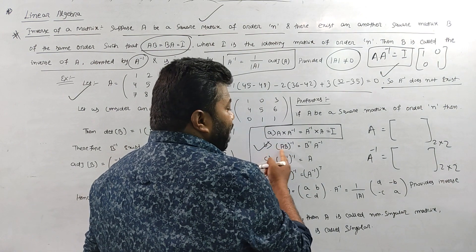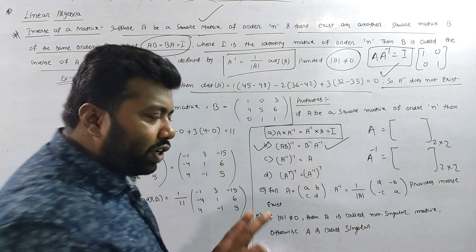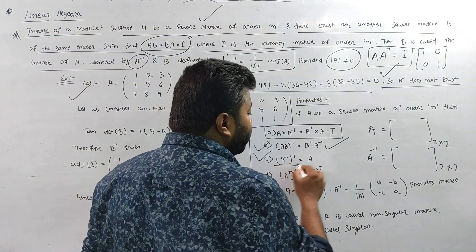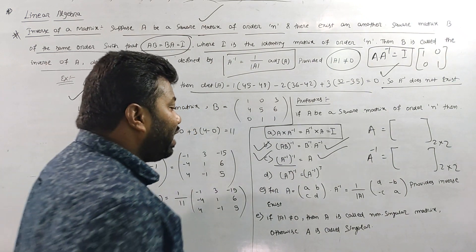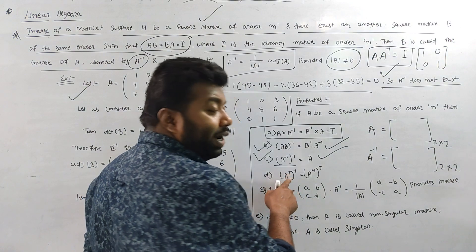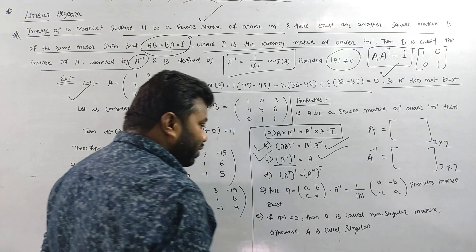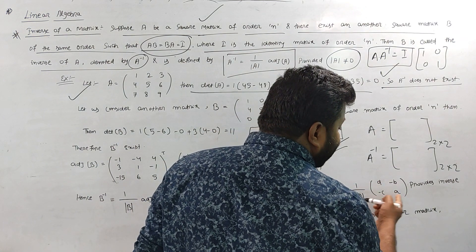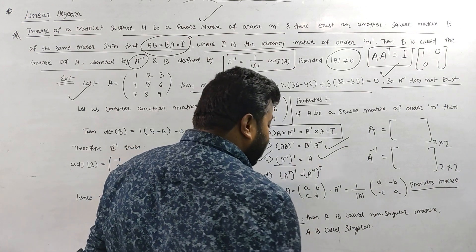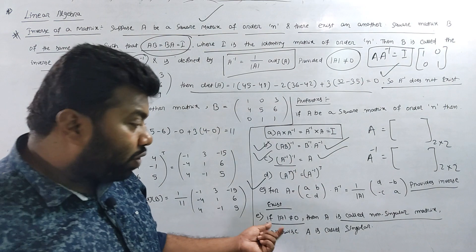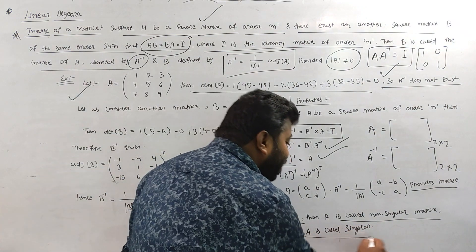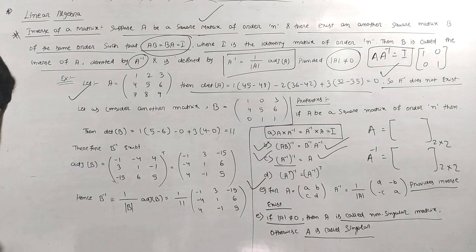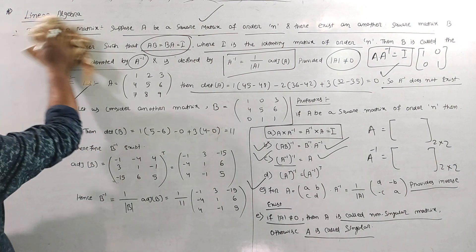The inverse of the inverse connects back to our original matrix A. The transpose inverse is the inverse of the transpose — they are the same. For a 2×2 matrix A with elements a, b, c, d, the inverse is equal to 1 divided by mod A times the matrix [d, -b; -c, a], provided the inverse exists. If mod A is not equal to zero, A is called a non-singular matrix; otherwise it is a singular matrix.